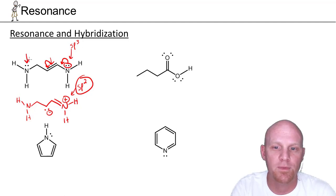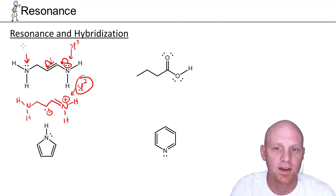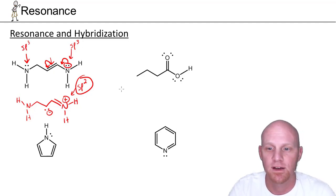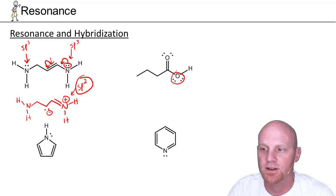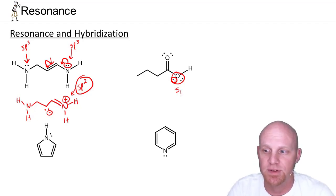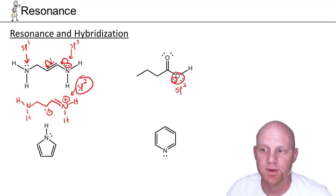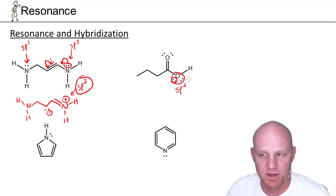We don't have to worry about that with the lone pair on the other atom over here — for that atom, the pi bond is two bonds away, not one. There's no resonance, and that nitrogen is simply sp3 hybridized. For the next atom, we've got a couple of lone pair options, but it's only this oxygen that is one bond away from pi electrons. So one of its lone pairs is going to be in a p orbital, making this atom sp2 hybridized, not sp3. One lone pair will be in the p orbital and participate in pi bonding through delocalization, while the other lone pair will be localized in an sp2 hybrid orbital.